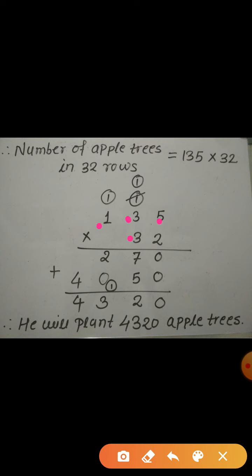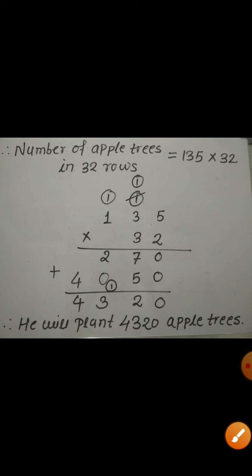In the second step, I multiply 135 by the digit in the tens place, that is by 3. I write 0 in the ones place first. Then 5 × 3 = 15; I write 5 and carry over 1. Then 3 × 3 = 9, and 9 + 1 = 10; I write 0 and carry over 1. Then 1 × 3 = 3, and 3 + 1 = 4. Adding the two results: 0 + 0 = 0, 7 + 5 = 12 so write 2 carry 1, 2 + 1 = 3, and 4 comes down. The product is 4320.